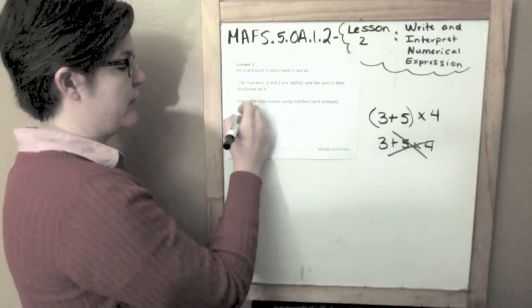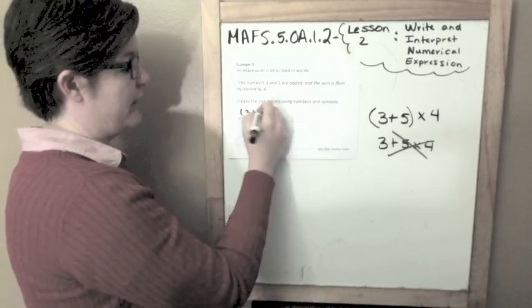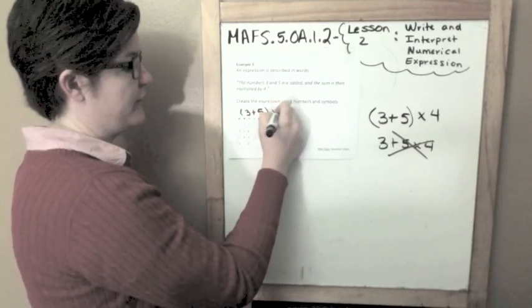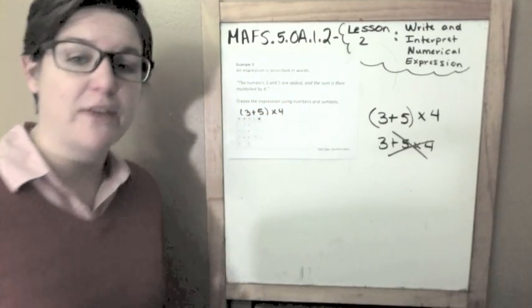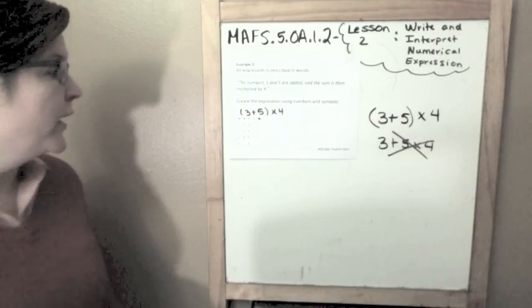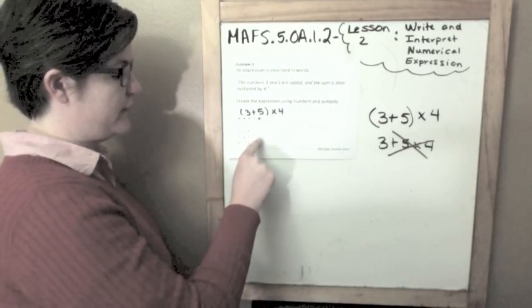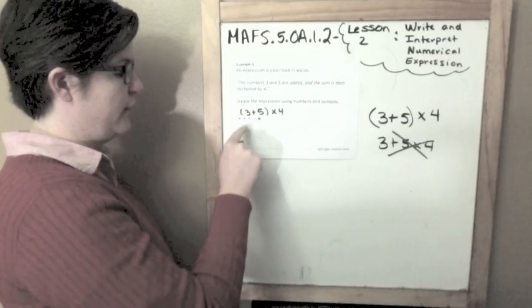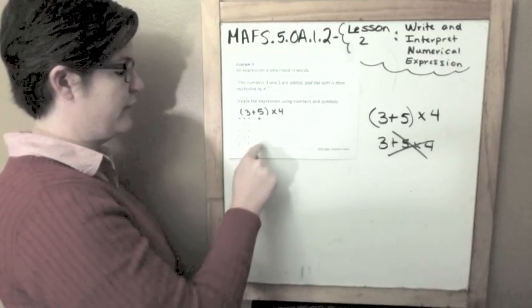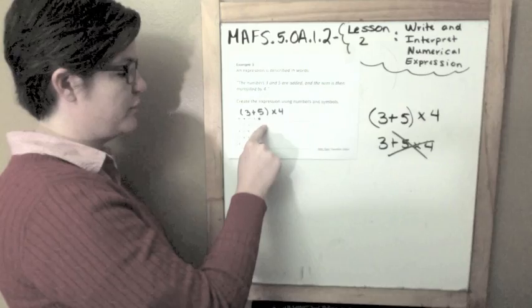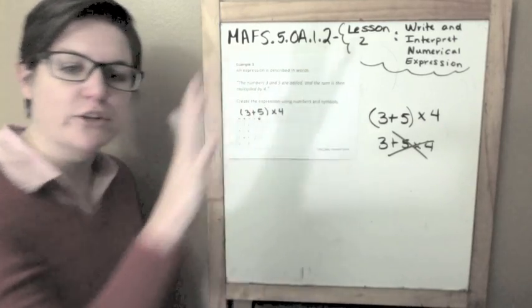So I would write 3 plus 5 in parentheses times 4. To do that in your equation editor, you would press parentheses, 3 plus 5, close your parentheses, multiplied by 4, and you're done.